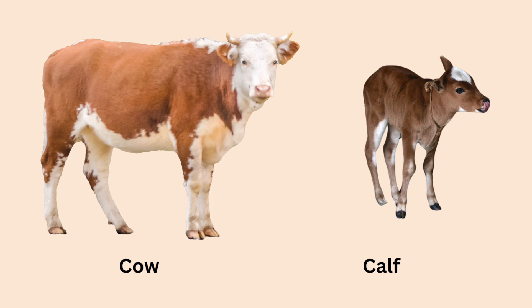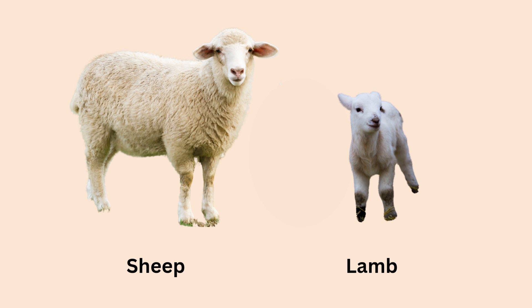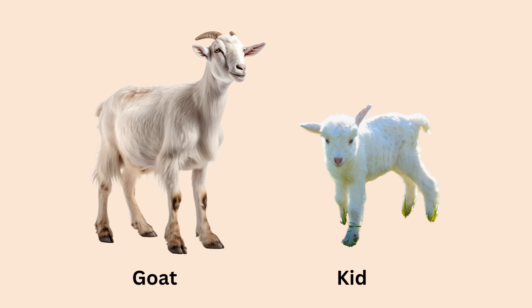A young dog is called a puppy. A young cow is called a calf. A young sheep is called a lamb. And a young goat is called a kid. From the moment an animal is born to the day it dies, a series of changes take place, and this is known as its life cycle.